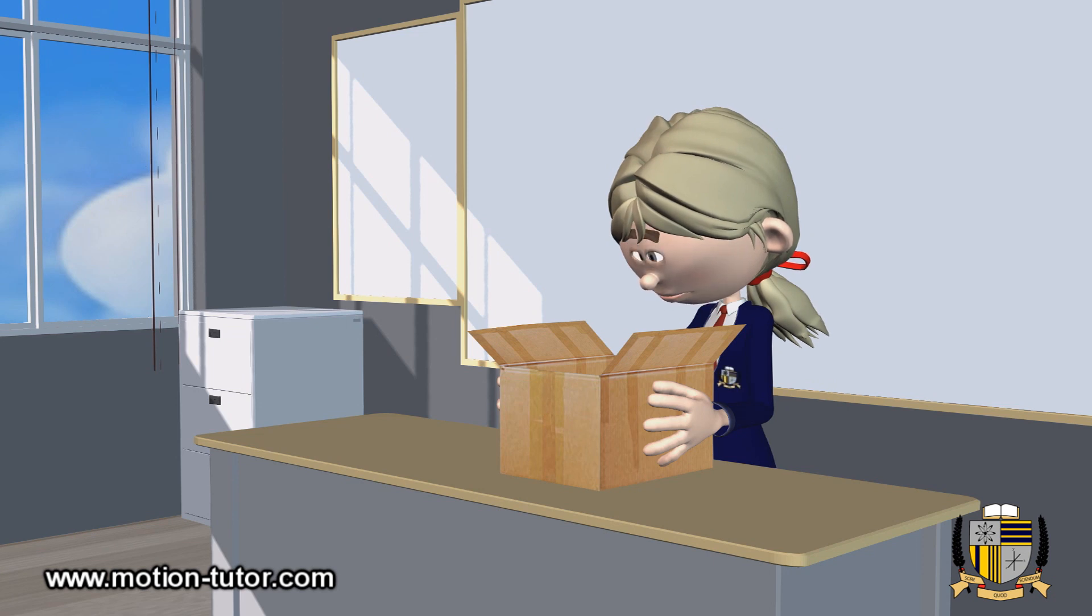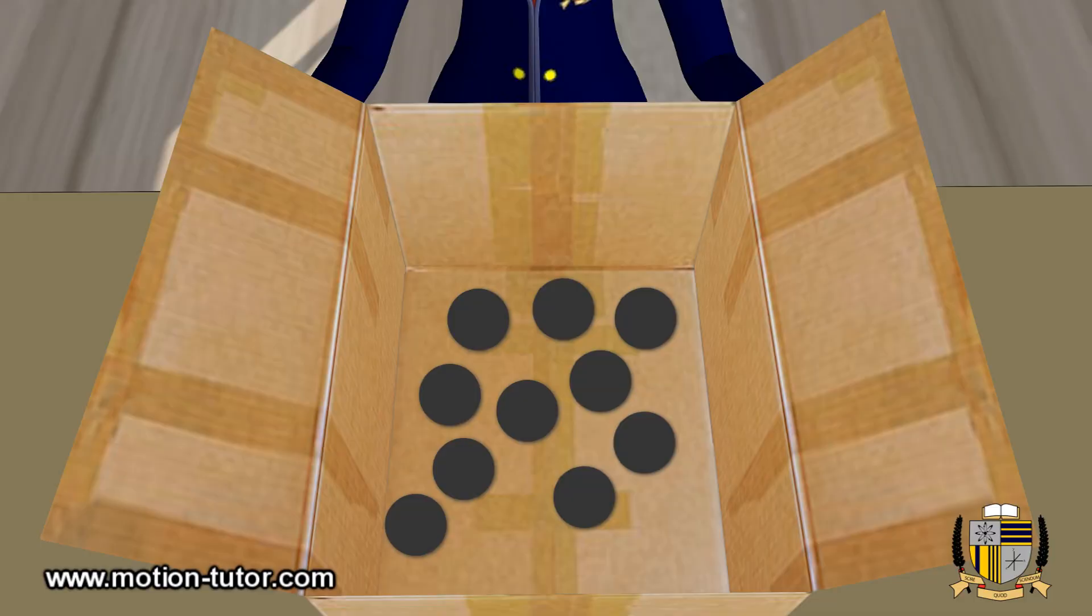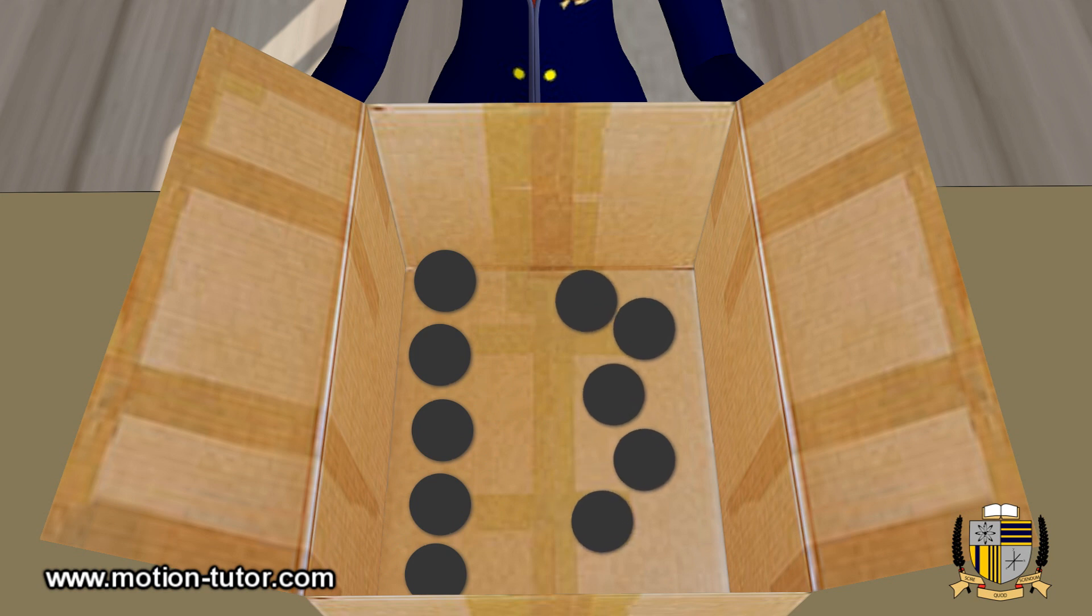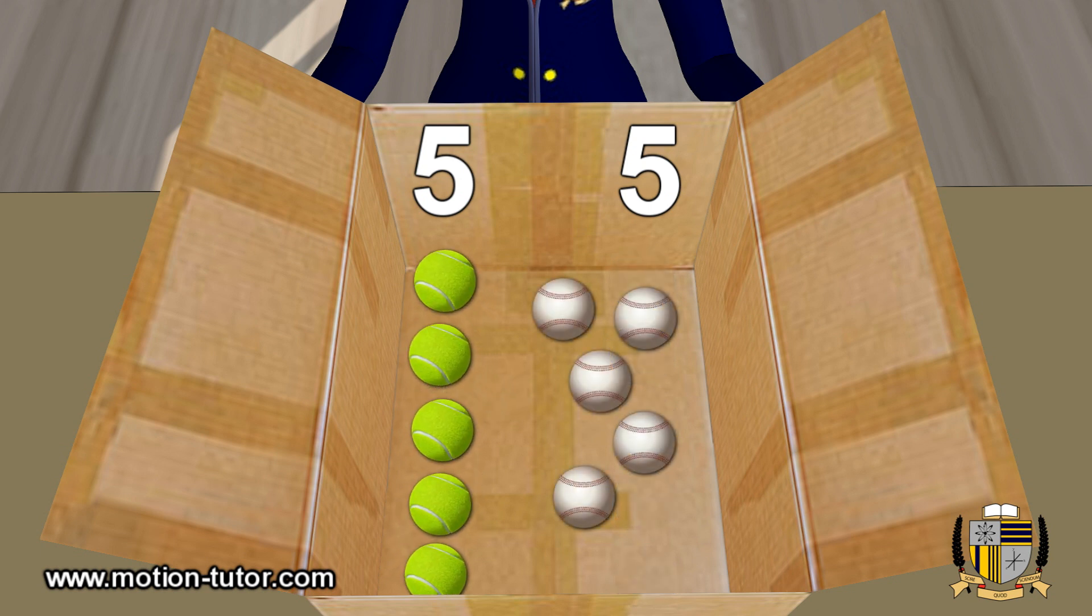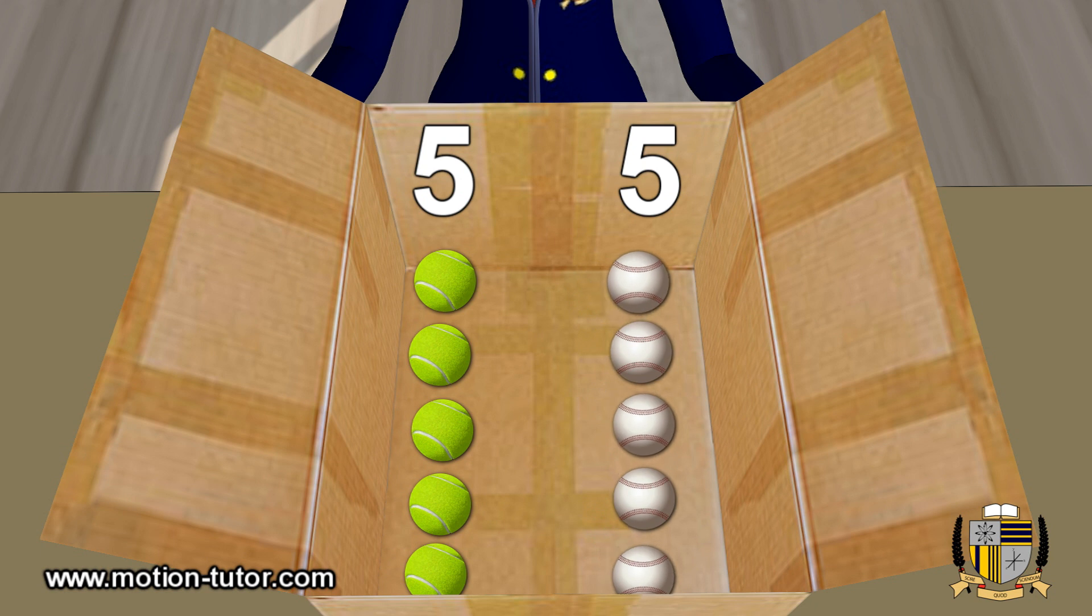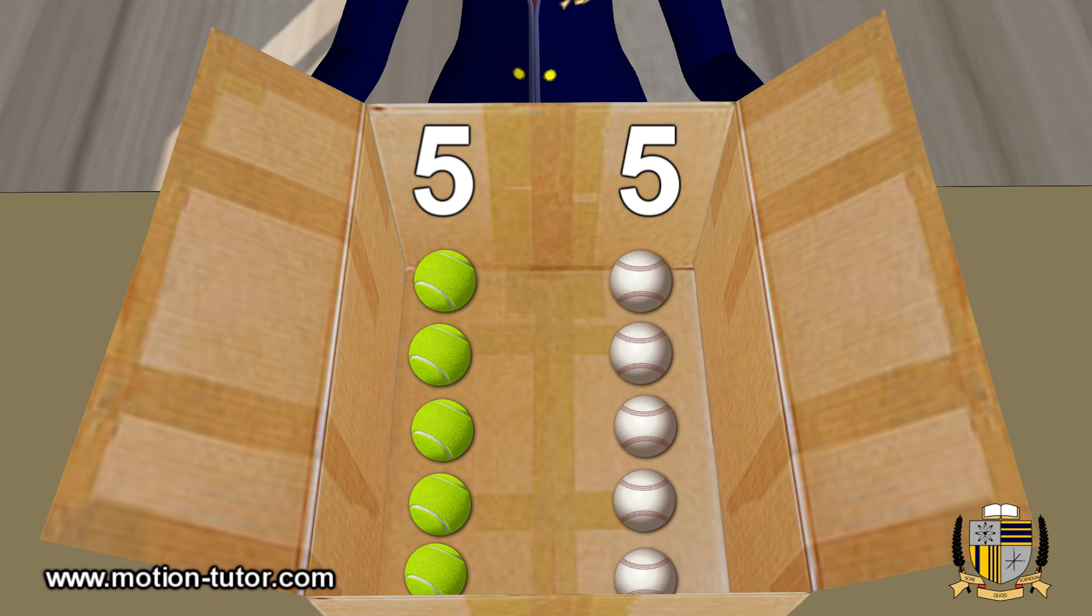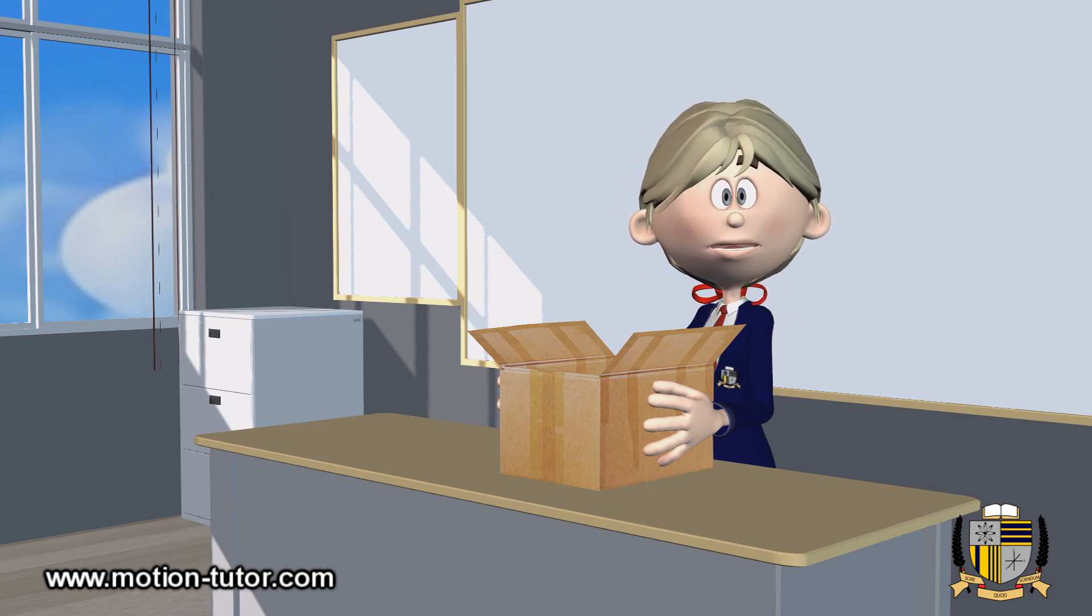So if we have ten balls, some are tennis balls and some are baseballs, but they say the number of baseballs is the same as the number of tennis balls. So if we have 10, these 5 have to be baseballs, and these are tennis balls. Here's a 5, and 5 is 10. So 5 balls are tennis balls, and 5 are baseballs. They're the same number of baseballs and tennis balls in this box that comprises 10 balls.